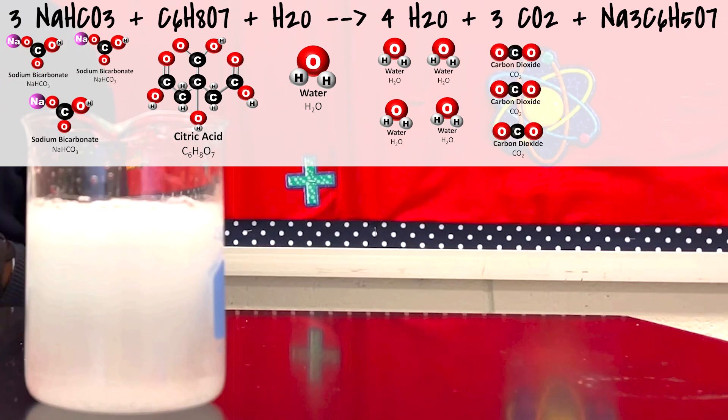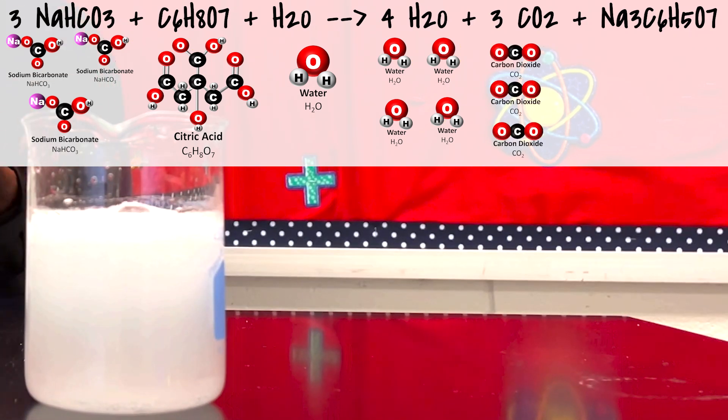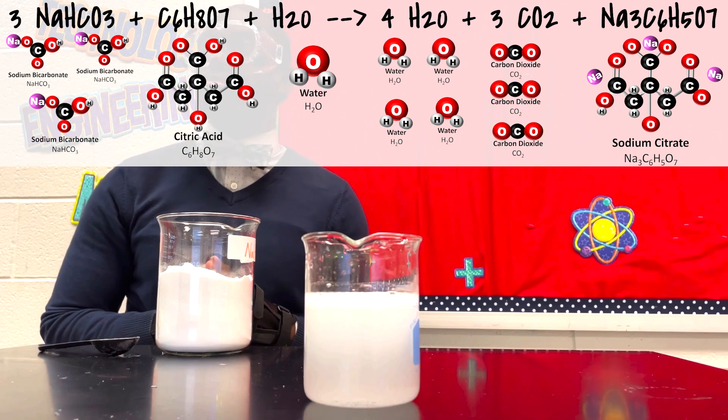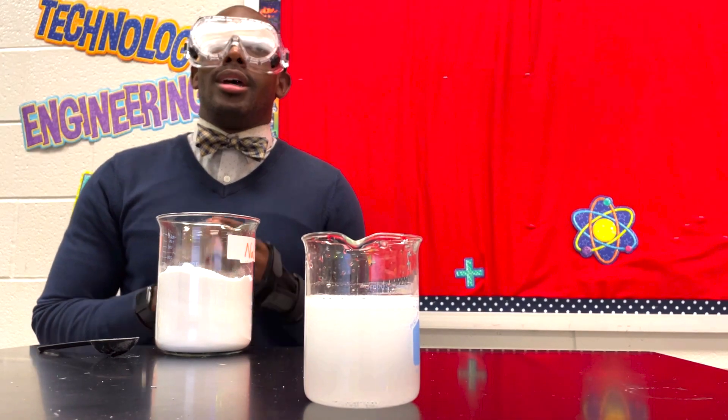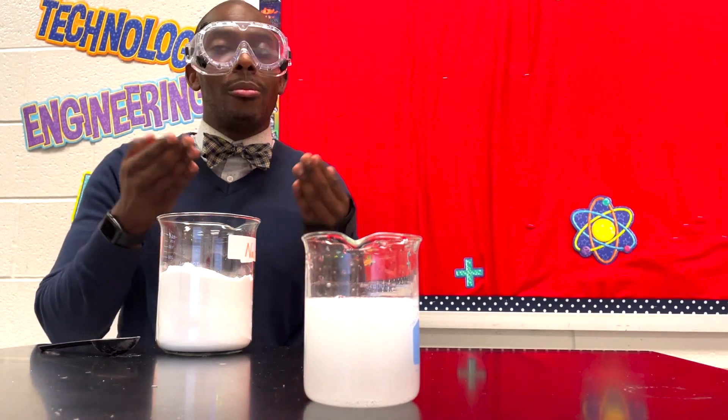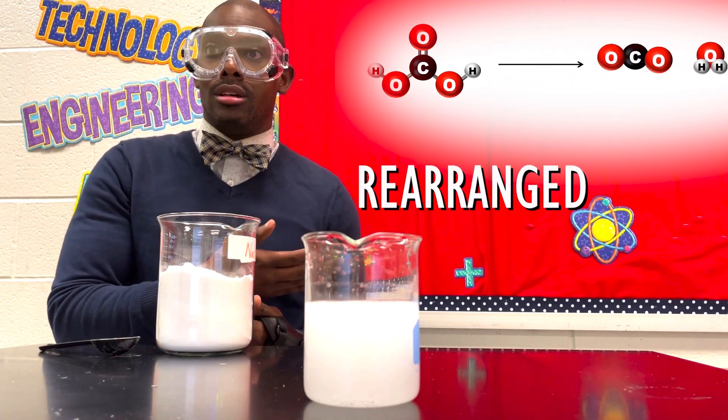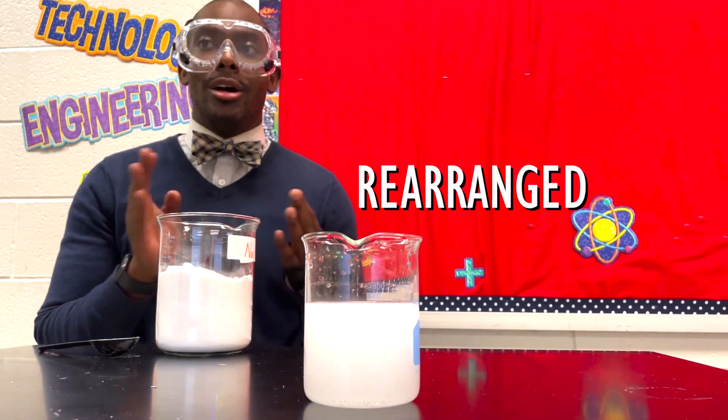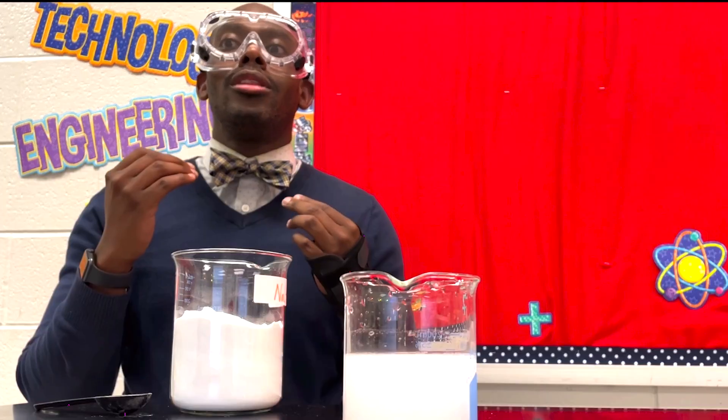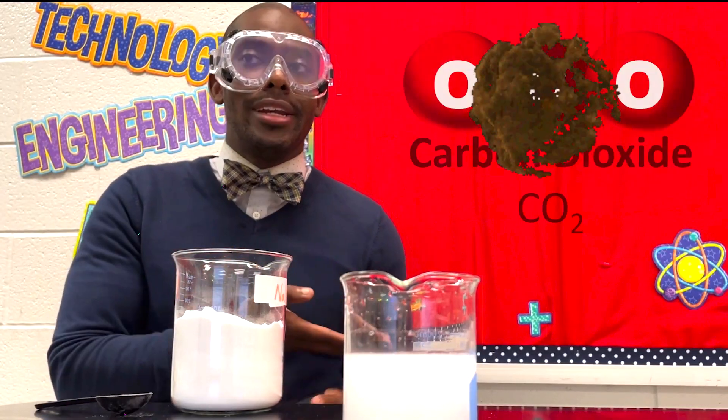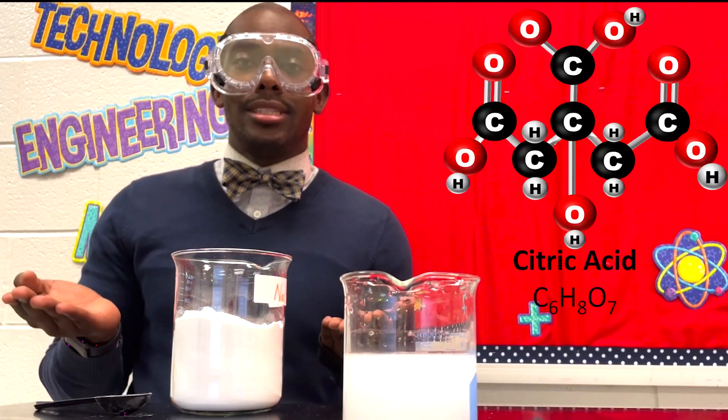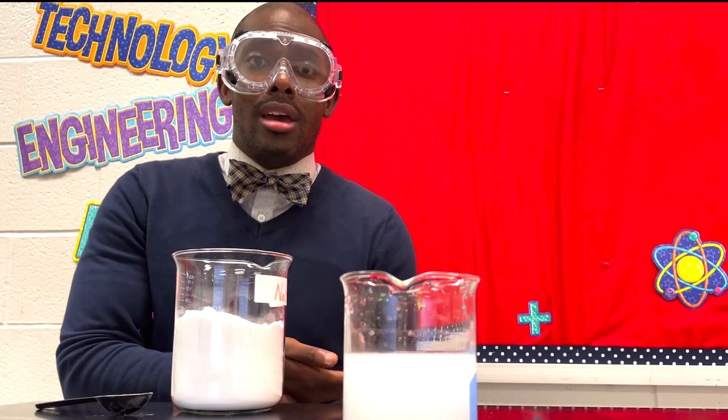Three carbon dioxide molecules and a molecule of sodium citrate. How did carbon dioxide get in this? Well, it came from the Alka-Seltzer when it was rearranged. What happened to the citric acid? The carbon dioxide wasn't created and the citric acid wasn't destroyed.